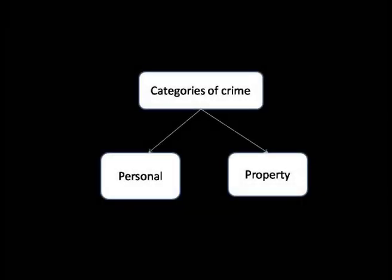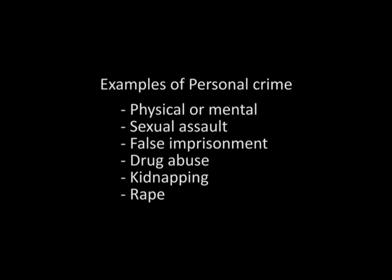There are various categories into which crimes are divided. The different types of crimes fall into two categories: personal and property crime. Crimes that affect an individual either mentally or physically are called personal crimes. Examples include physical, mental or sexual assault, false imprisonment, drug abuse, kidnapping, and rape.